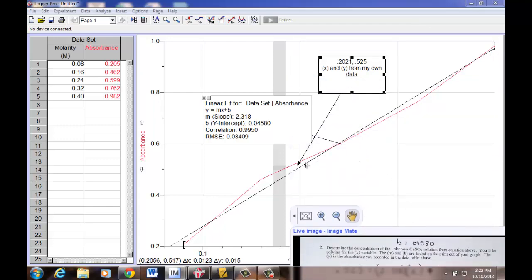So notice with number one, processing data number one, you're using the best straight line. Number three, you're going to use your actual line, the actual red line from your data mate here that will show you what your answer would be.